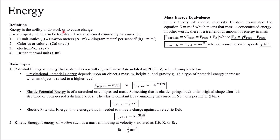Energy is the ability to basically cause change. It can be measured in different units, transferred or transformed. We have the equivalence between mass and energy with E equals mc squared. The basic types are potential, due to position or state, and kinetic, due to motion. Today we'll focus mainly on gravitational potential energy — mgh — due to being at a certain height. And then we have electric potential energy, which uses Coulomb's constant (1 over 4 pi epsilon naught), multiplied by the two charges and divided by their distance of separation. Notice how it's similar to Coulomb's Law, but we do not have r squared on the bottom because we're talking about energy, not force.